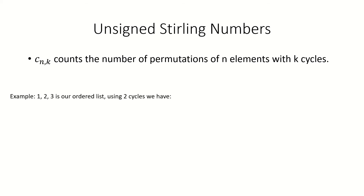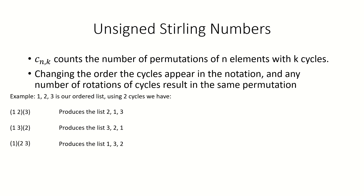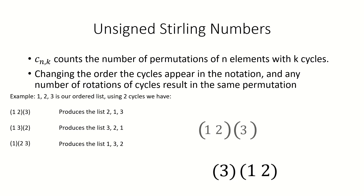For example, if we had a list of three elements and we wanted to find all the permutations with two cycles — which requires one cycle of length 2 and one cycle of length 1 — we have the following possibilities. There are other ways to write these cycles, including swapping the order of the cycles and rotating cycles, where we move the element in the last position of the cycle to the first position.